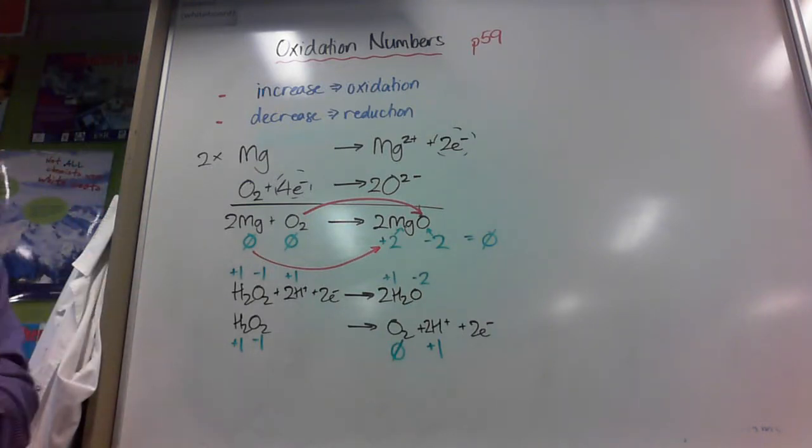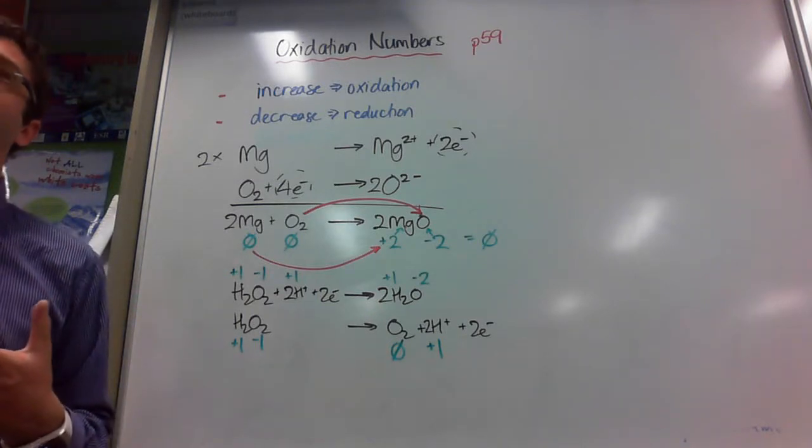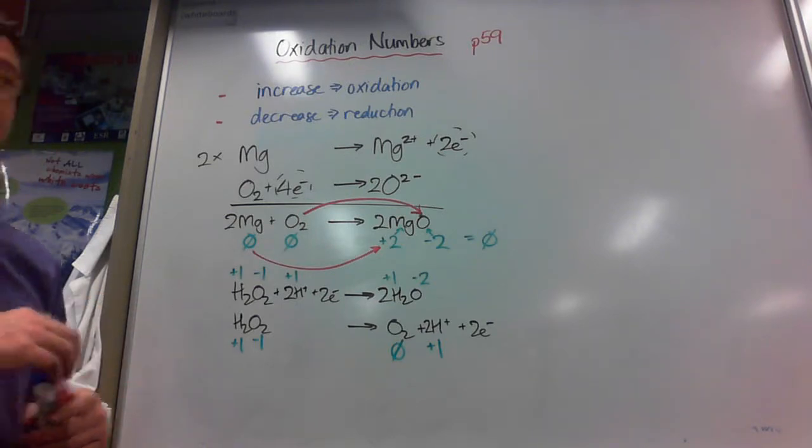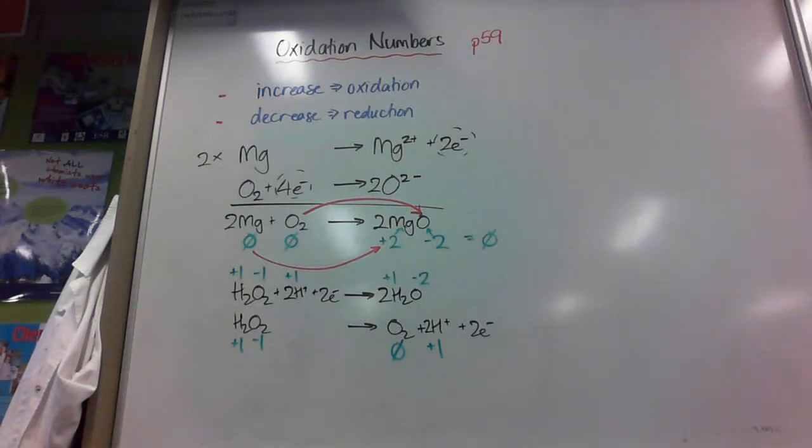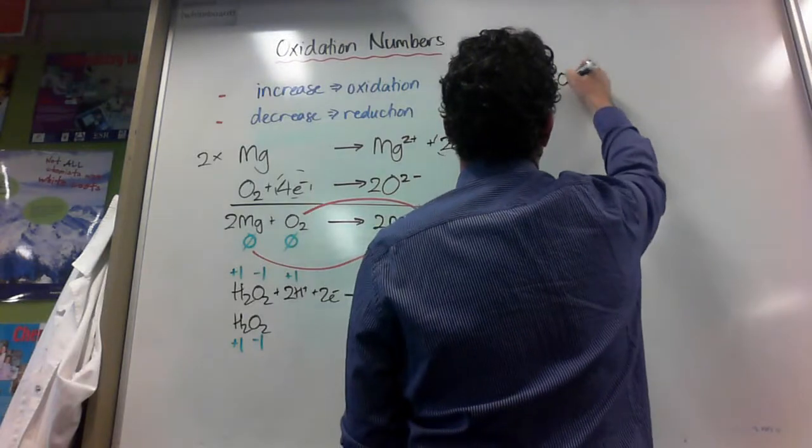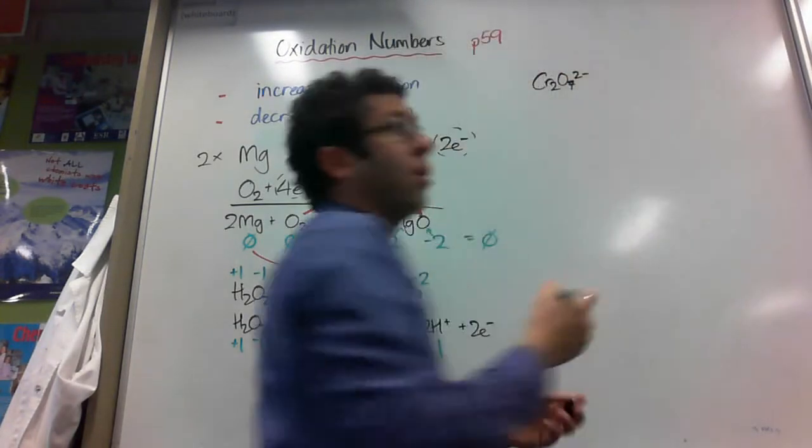Nearly done all the rules, believe it or not. So, it's not too hard. We're going to have a look now at the dichromate one, though, because that's quite a tricky one. So, we're going to look at the dichromate ion. Just the ion, because it's often with potassium, which is a spectator ion.